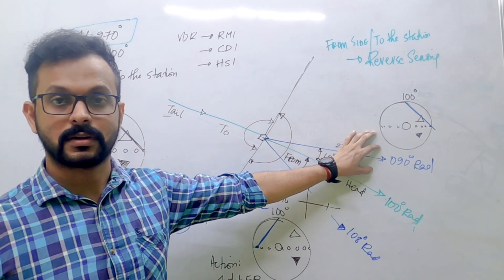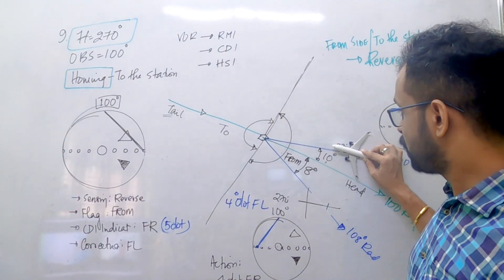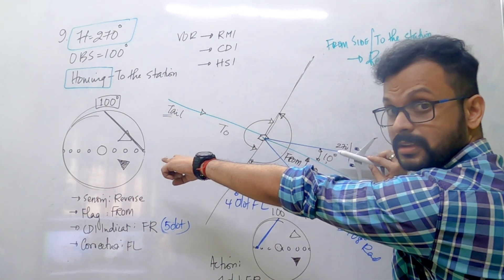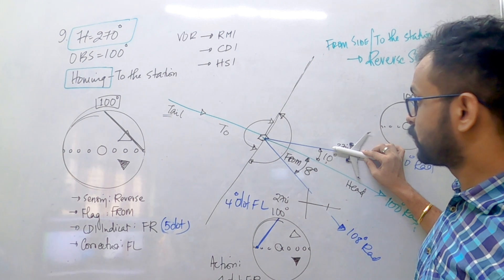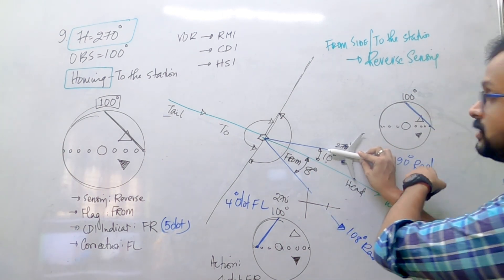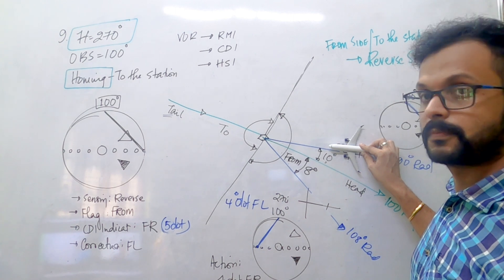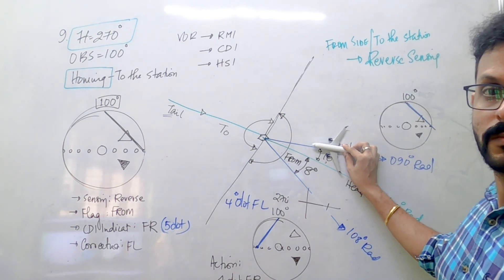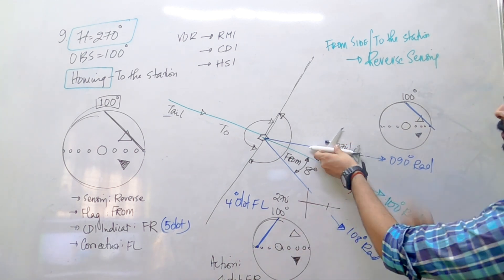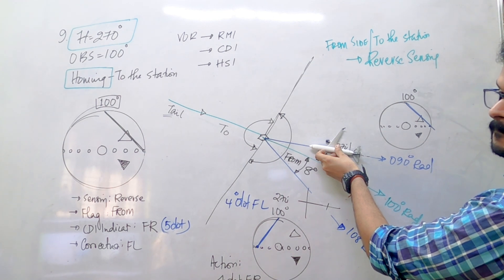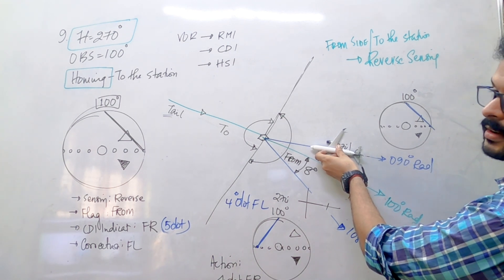If the initial radial of the aircraft was 090 degrees and you want to center the needle at the current position without moving the aircraft, you change the OBS to match the current radial. The desired radial should equal the current radial. If you set OBS to 090 degrees — the current radial — the needle will center at your current position.